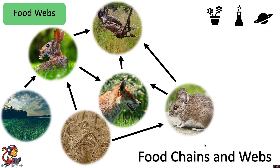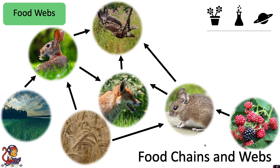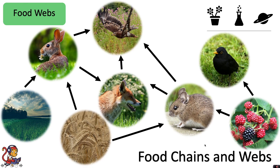Perhaps the mouse doesn't just rely on wheat — it also eats blackberries. And maybe the blackberries are also eaten by blackbirds, which might then also be eaten by the fox. So we end up with this very complex interaction between plants and animals.